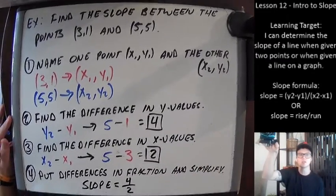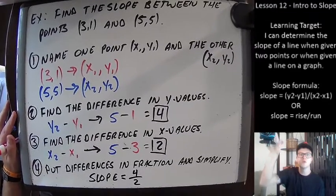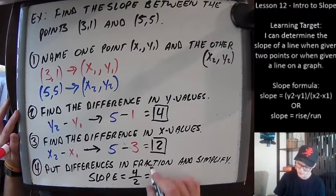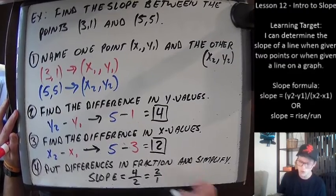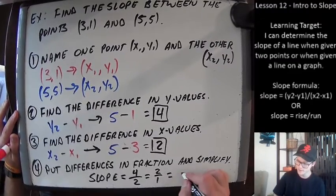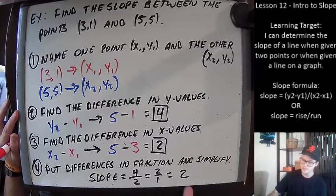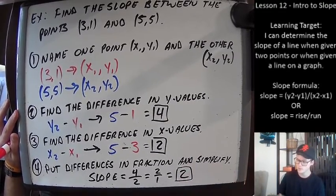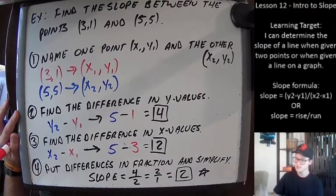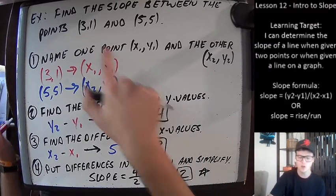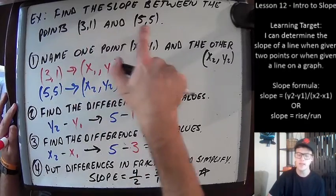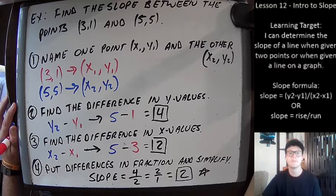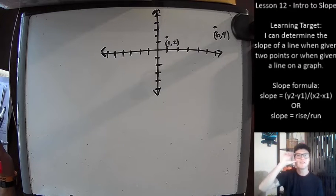Four over two simplifies to two over one, or just two. So the line that goes through the point (3, 1) and the point (5, 5) has a slope of two.